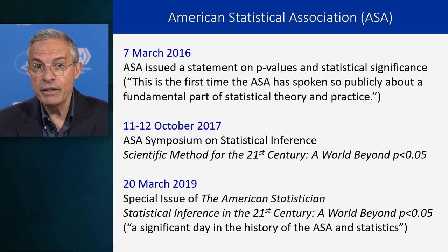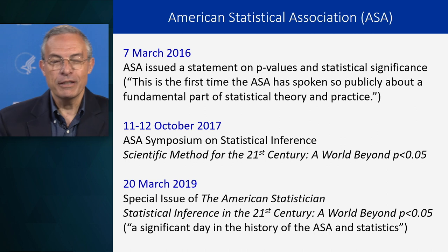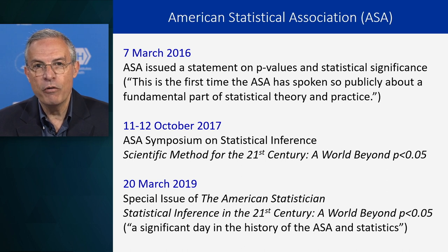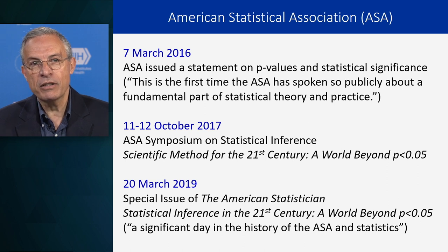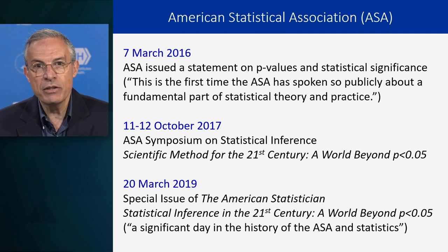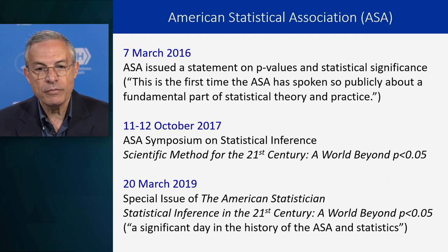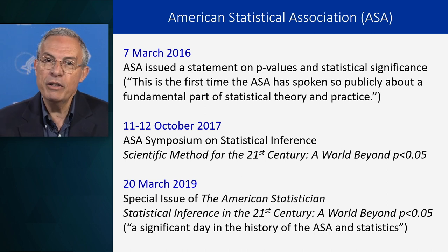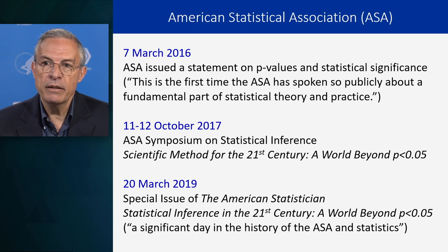Then in March 2019 — just two or three months ago — there was a special issue of the American Statistician. The title was Statistical Inference in the 21st Century: A World Beyond P Less Than 0.05. This special issue started with a 19-page editorial paper, followed by 43 additional papers, all just on the p-value. The ASA said in announcing the special issue: 'This is a significant day in the history of the ASA and statistics.' So again, it's a very exciting time. The transition period is just starting.